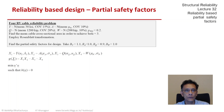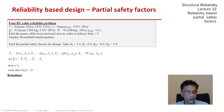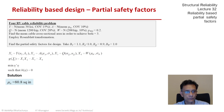We need to ensure a reliability of beta equal to 3. That gives us a condition for the unknown mean of A. If you want to do it yourself, please pause the video. Otherwise, the solution is about 81 square inches. A mean of that is going to give us a reliability index beta of 3, given all the other statistics of the problem.